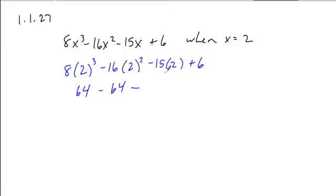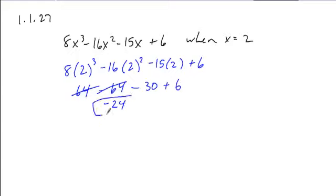15 times 2 is 30, and you're plus 6. So here the 64s cancel. The negative 30 plus 6 gives you a negative 24 for your solution.